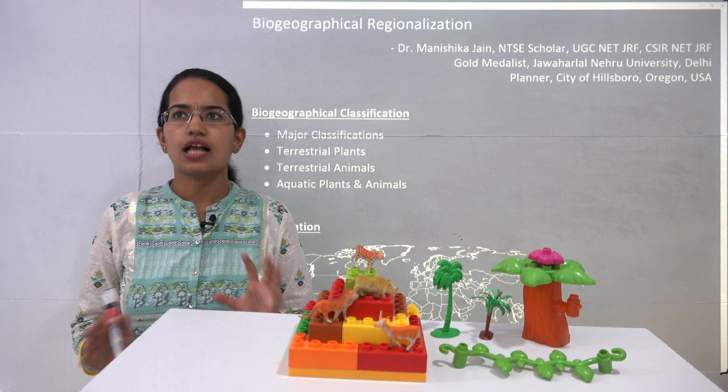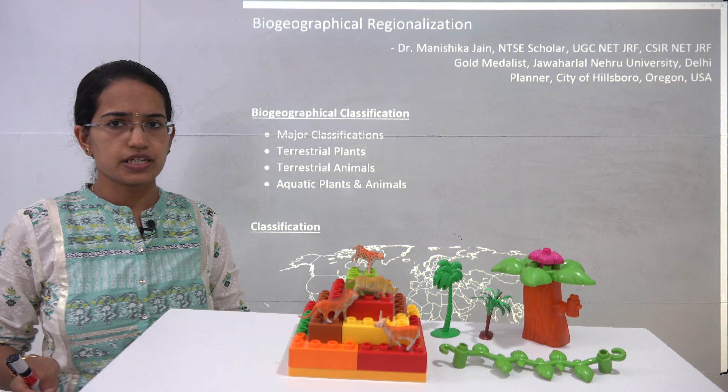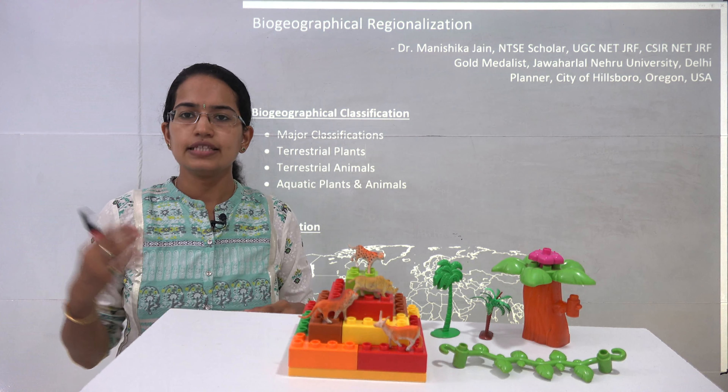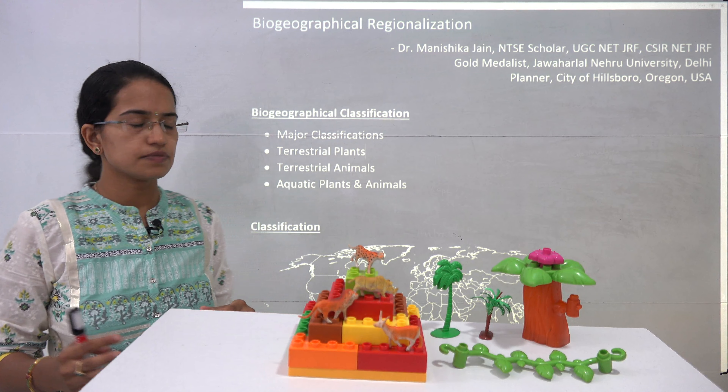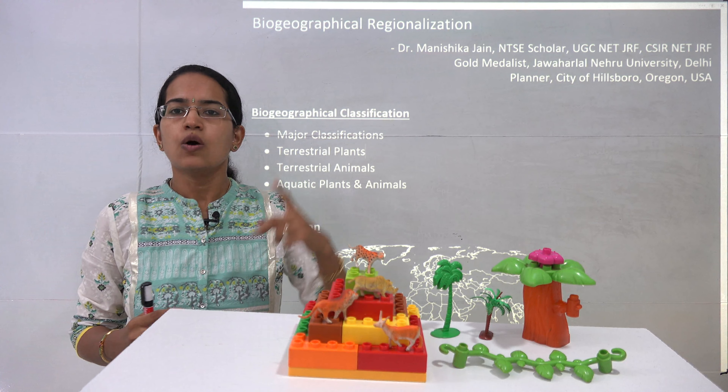We will design our class in such a fashion that we would have 4 lectures on this. The first lecture today focuses on the general concept of biogeographical regionalization and the various major classifications. Then we would have 2 lectures — one on terrestrial plants and another on terrestrial animals — and finally another lecture on aquatic classification for plants and animals. So let's start with the basics of biogeographical regionalization today.